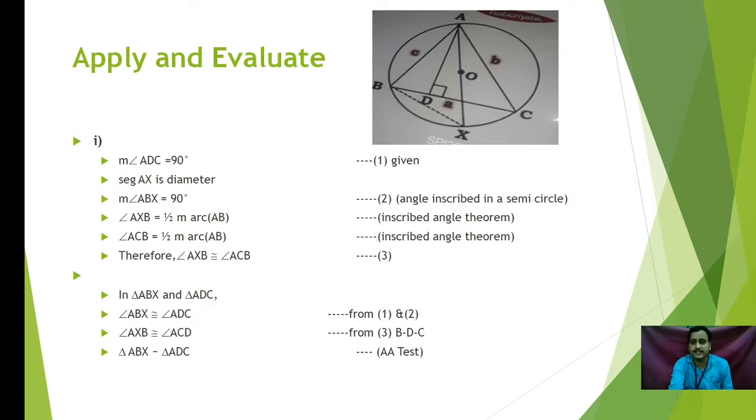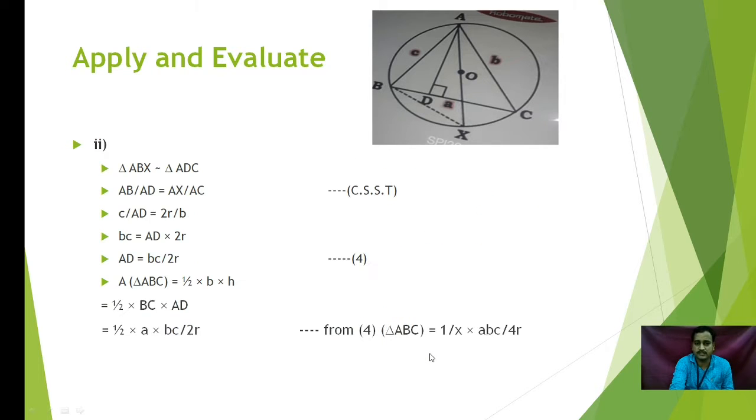Now, we have to prove that the two triangles, that is triangle ABX and triangle ADC, are similar. How will you do this? From 1 and 2, what we can say? Angle ABX and angle ADC, they are equal, they are congruent. Also, from 3, we can say that angle AXB is congruent to angle ACD. From this, we can say that triangle ABX is similar to triangle ADC by angle-angle test. These two triangles are similar.